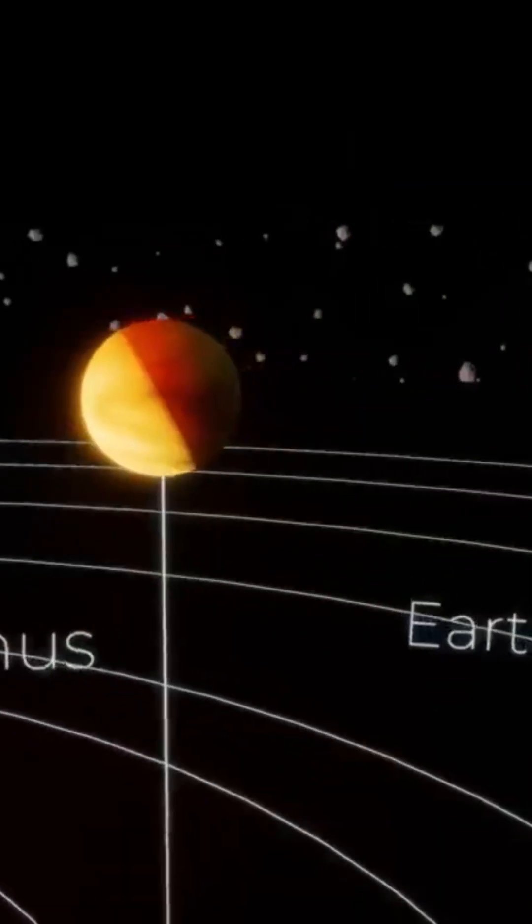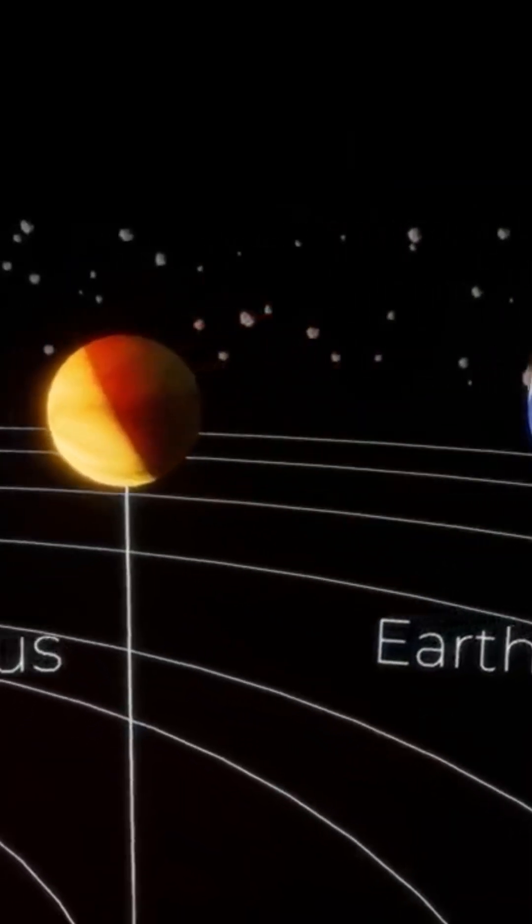Barely larger than the Moon, Mercury is the smallest planet in the Solar System.